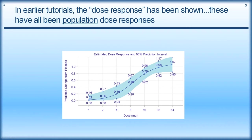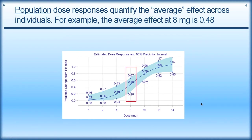In earlier tutorials I've shown graphs like this — this is the dose response, but what we're talking about here is a population dose response. The idea is that as we go across the dose range, we see an increase in effect. We present that as a median or mean prediction and a 95% prediction interval for each dose. When talking at the population level, we're quantifying the average effect across individuals.